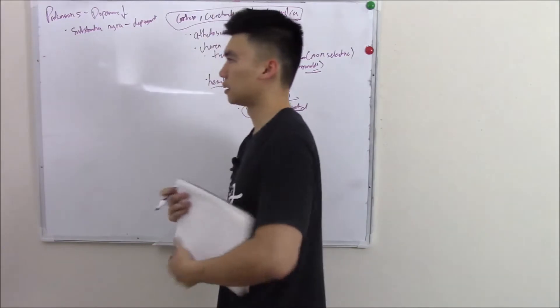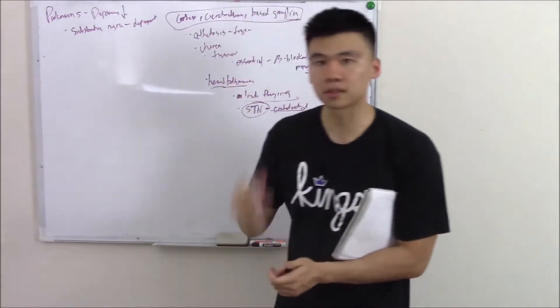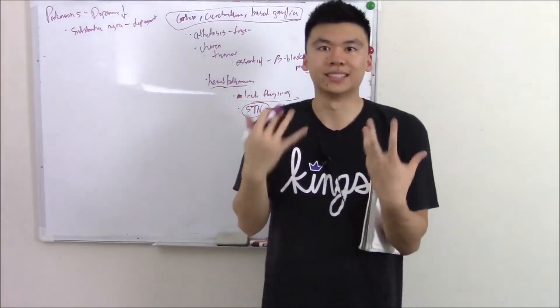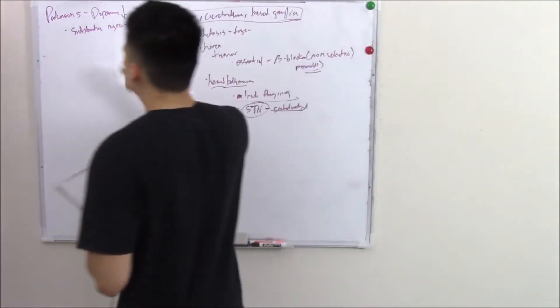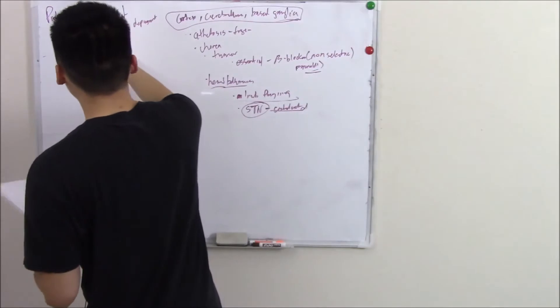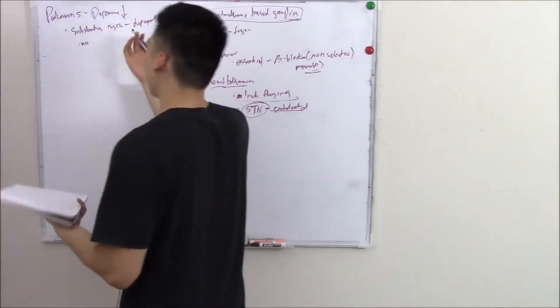When your substantia nigra dies then you don't have dopamine. We said dopamine was the main neurotransmitter that initiated and stopped movement. So you're gonna have all types of movement disorders.